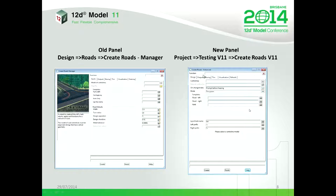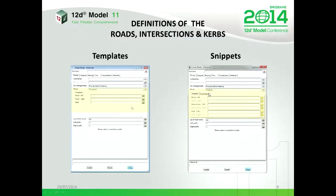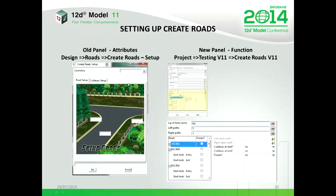In the new panel we can now run both templates and snippets — snippets being probably the buzzword of these design sessions. With the old panel we were limited to running and modifying templates through Create Roads. Now you've got the option on the new panel of running snippets, and I'll do a live demonstration in a moment. The old panel had a separate setup panel for applying attributes — like road width and curb returns — to the centerline.